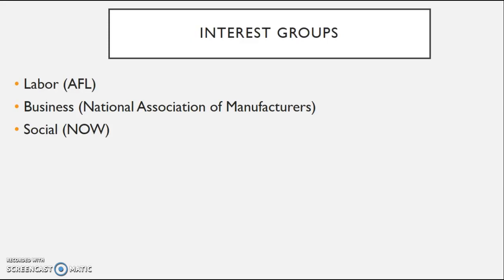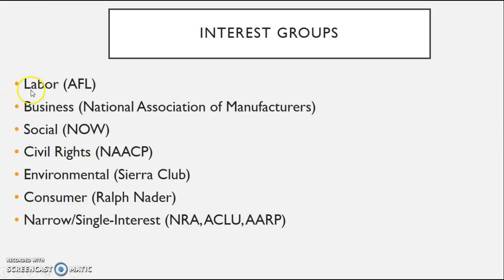With interest groups, you have various offshoots, aside from the three general ones. You have everything from labor, business, social, civil rights, environmental, consumer, to narrow single-interest groups. The big one to be familiar with would be the NAACP, which we'll focus on in Unit 3. Also very important are the Sierra Club in promoting the environment, the NRA, the ACLU, and the AARP.